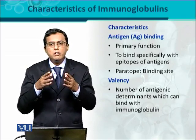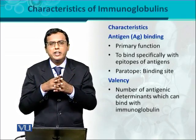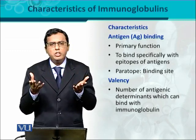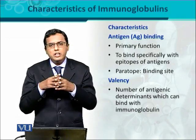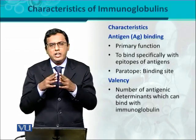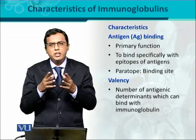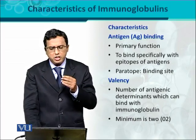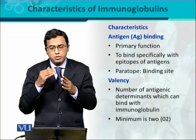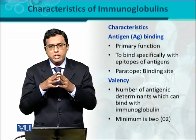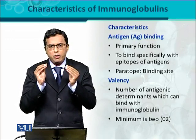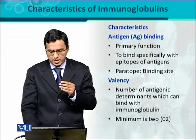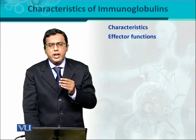The second important characteristic of immunoglobulin is valency. Valency is the ability or the number of antigenic determinants that can be bound with an immunoglobulin. It depends upon the nature of the immunoglobulin - how many antigenic determinants can bind on its surface. Generally, the minimum valency of an immunoglobulin or antibody is two, meaning they have two paratopes which can interact with and bind two antigenic determinants or epitopes.